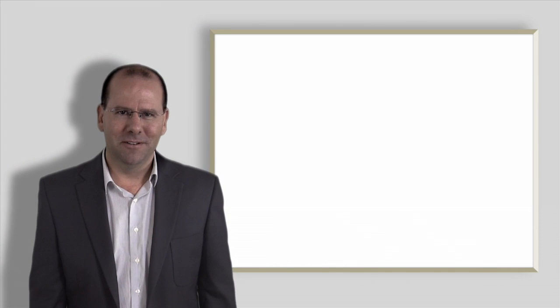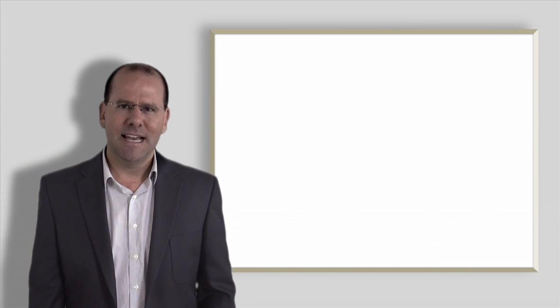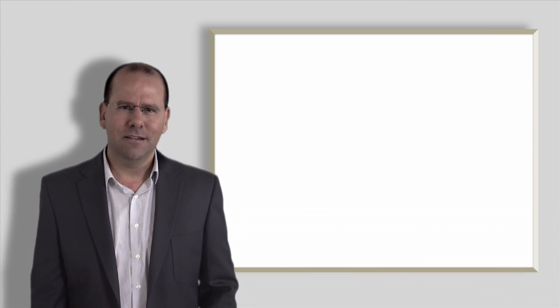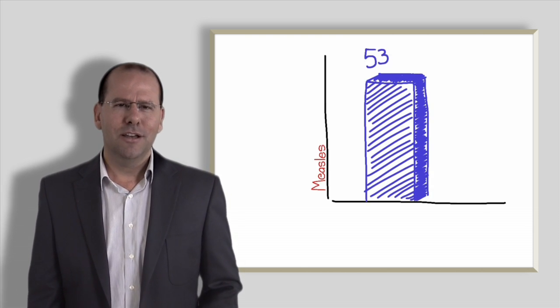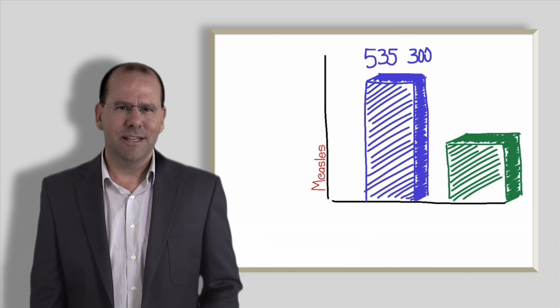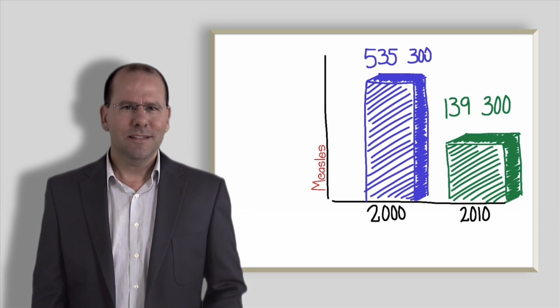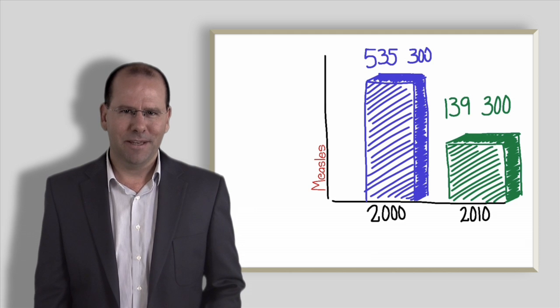Fact number seven. Global measles mortality has declined by 74% from an estimated 535,300 deaths in the year 2000 to 139,300 deaths in the year 2010. This is thanks to an intensified vaccine campaign.